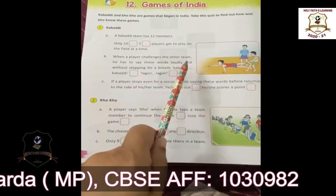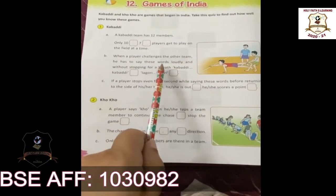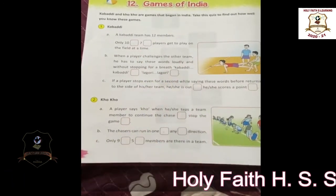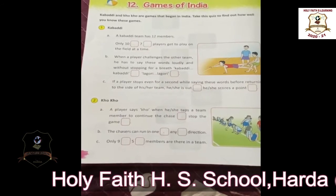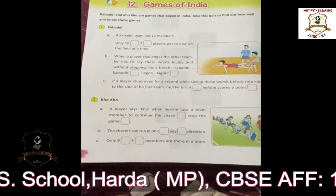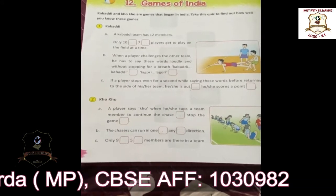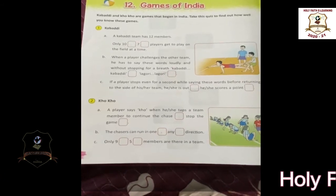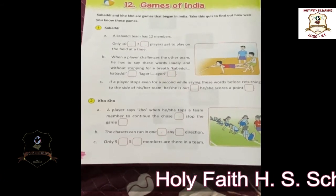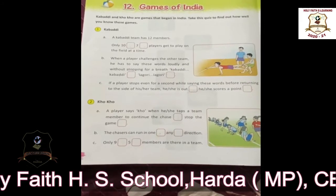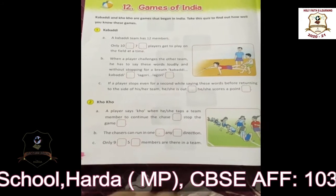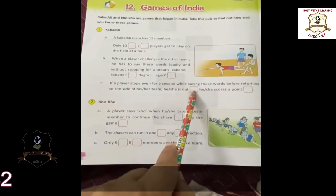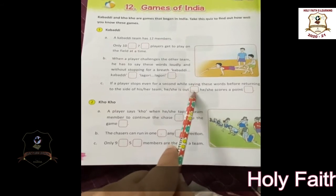The second question: when a player challenges the other team, he has to say these words loudly and without stopping for a breath. What does he have to say? He will say Kabaddi, Kabaddi. Third: if a player stops even for a second while saying Kabaddi, Kabaddi before returning to the side of his or her team, then he or she is out. He has to continuously say Kabaddi, Kabaddi, and if he stops saying it, then he is out.